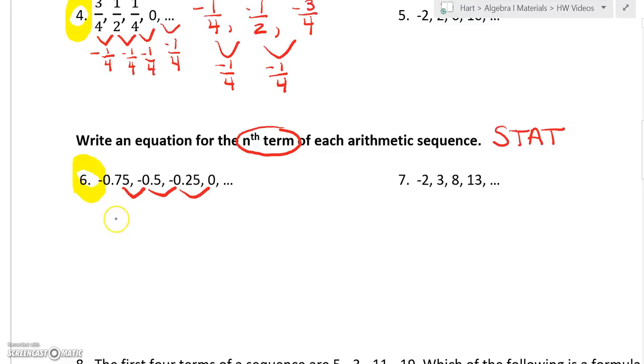For now I'll do it by hand. You can find how much it's increasing. On this one from negative point seven five to negative point five, that's adding point two five. Same thing point five to negative point two five, we're adding point two five. So that means our slope is point two five.